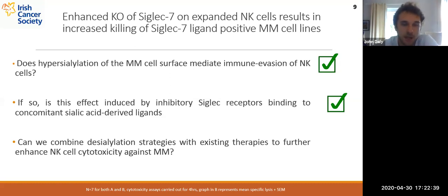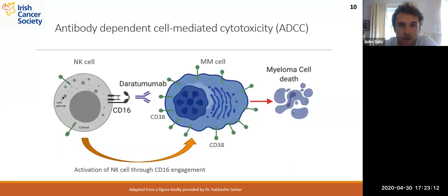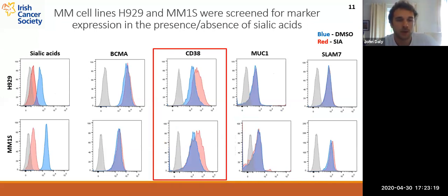Finally, we wanted to combine desialylation strategies with existing therapies to further enhance NK cell cytotoxicity against myeloma. One of the key mechanisms of action of NK cells is ADCC, mediated through their CD16 receptor which binds to the Fc chain of antibodies, delivering a strong activating signal. In myeloma, one of the most common monoclonal antibodies used for cellular therapy is daratumumab, which binds to the CD38 antigen — heavily expressed on all myeloma cells. We screened myeloma cell lines M1S and H929 for a panel of relevant target antigens before and after desialylation, to see if sialic acids were masking the expression of some of these antigens.